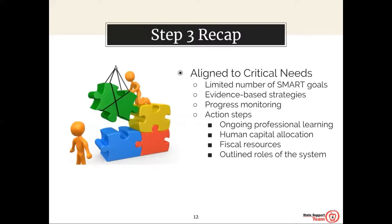At the BLT or CSLT level, the team will set the course for the plan at the building level and the implementation of adult practices or evidence-based strategies. Building and community school level teams should consider: What are the expectations for the TBTs? What will success look like for adult implementation and student performance? And if implemented with fidelity, what will be the impact for all students and specific subgroups? The BLT or CSLT will also share with all TBTs which adult practices are having a positive impact and develop a plan to replicate effective practices throughout the building.